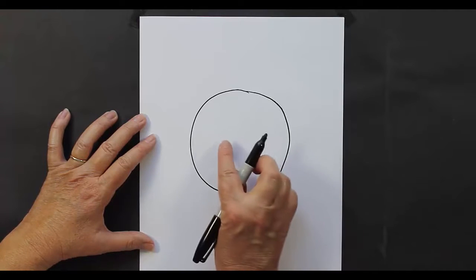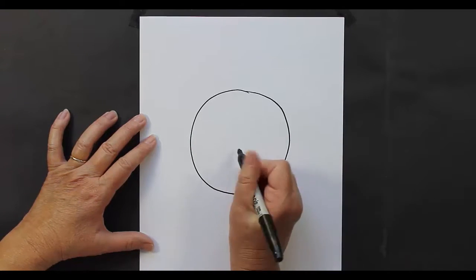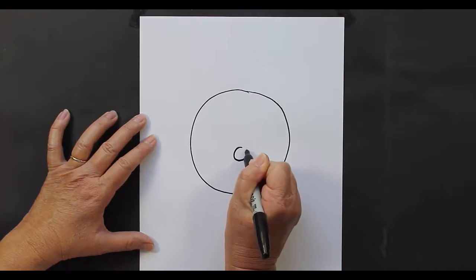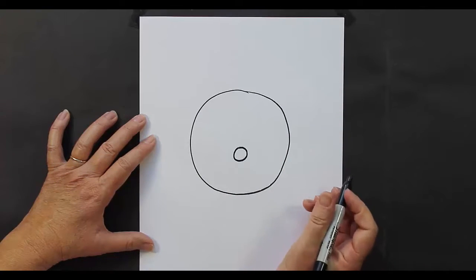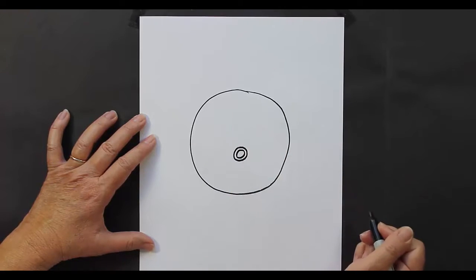Then you're going to find the middle of your circle and go down just a touch. And you're going to make a smaller circle. Inside that smaller circle, you're going to make an even smaller circle.